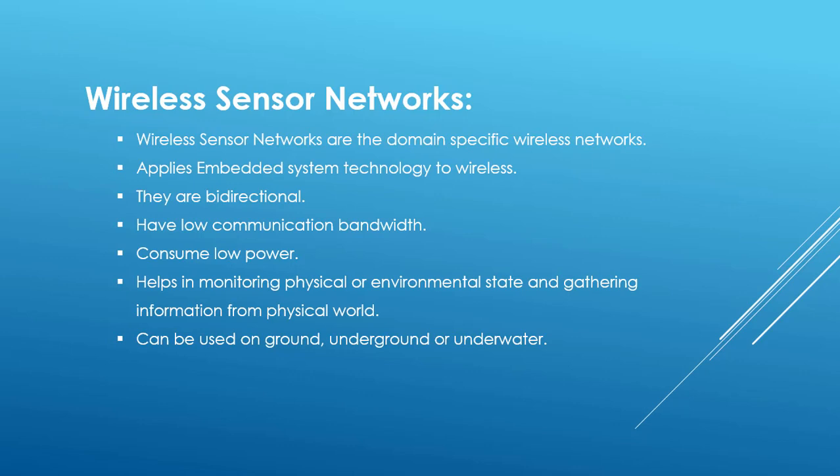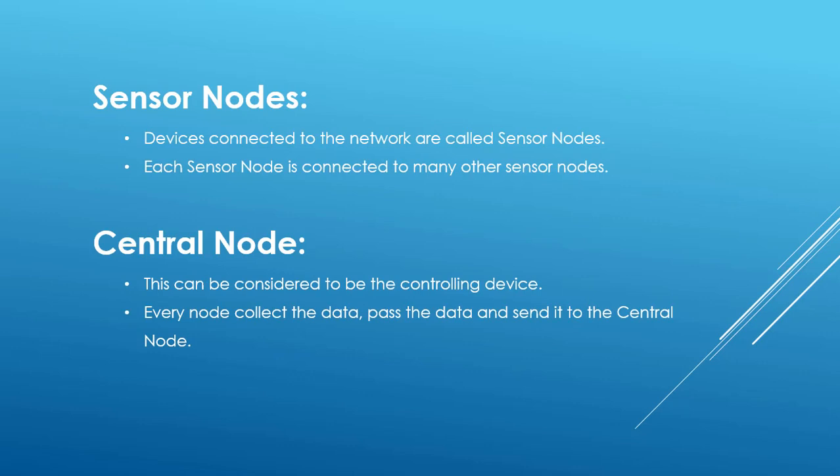Wireless sensor networks consume very low power because the devices attached to them have low power and low memory. A battery is typically attached for power. Wireless sensor networks help in monitoring physical or environmental conditions — such as temperature or pollution — gathering such information from the physical world with the help of sensors. They can be used on the ground as well as underground and underwater.